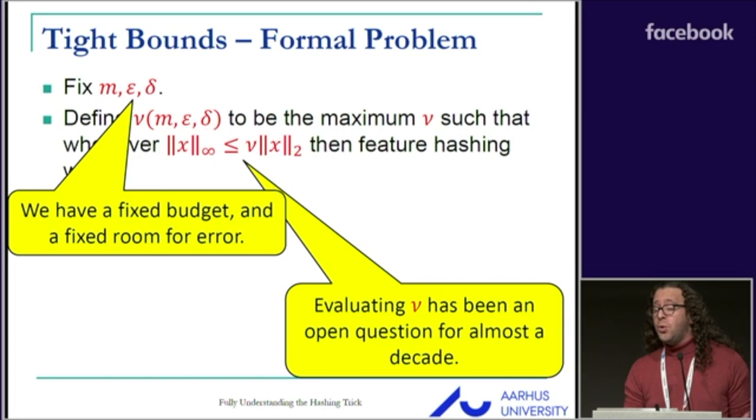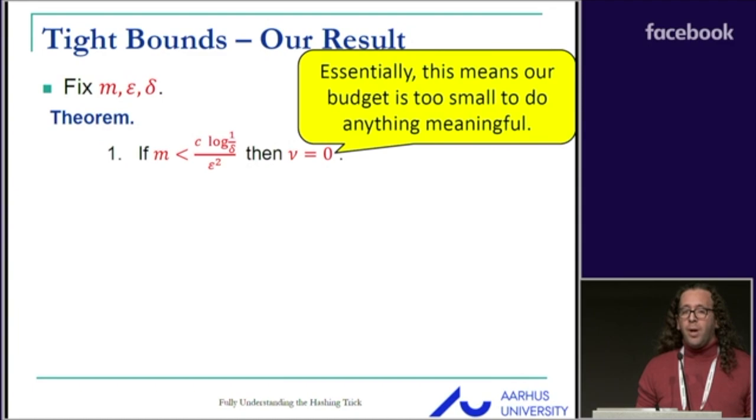Evaluating this value nu was actually an open problem since the original feature hashing paper in 2009. We resolved this problem by presenting tight bounds on nu.